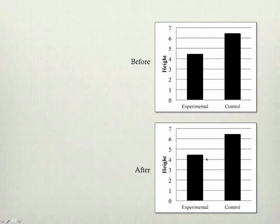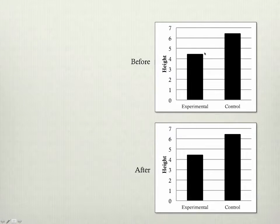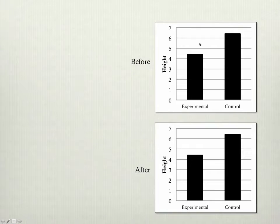And then we just see what happens after the experiment and we say, well, the group that got the shrink ray is much shorter than the control group. But of course, this wasn't really a control group because it didn't start off being the same. A control group is only a control group if it starts off exactly the same as the experimental group, and then you change just the one thing — the treatment given to the experimental group.